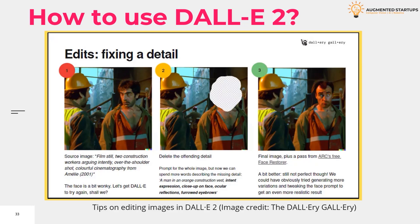For photography, it suggests including proximity, angles, lighting quality, and even lens type in the prompt. For illustration, it provides examples of different styles, media, and textures. It also shows how you can use styles from various artistic traditions to get interesting results.